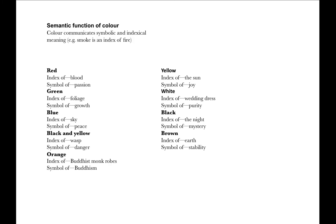Alongside the formal function of color is the semantic function of color. Color communicates symbolic and indexical meaning. An example of indexical meaning: smoke is an index for fire. The following is a list of symbols related to particular colors. Of course, symbols are not universal — different cultures will have different meanings for, or multiple meanings for, one individual color.